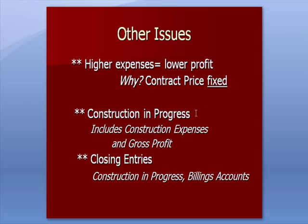We're going to have an account we haven't seen before called Construction in Progress. It's an asset account where we post two things: the construction expenses for the job and the gross profit. At the end when the job is completed, we zero out two accounts — the Construction in Progress account and the account where we were billing the client.